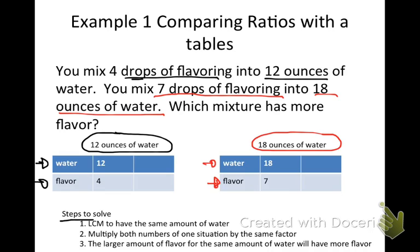The steps to figure that out: find the least common multiple to have the same amount of water. I'm looking at 12 and 18 — what's the smallest common multiple of both? Twelve times two is 24, but 18 doesn't go into 24. Twelve times three is 36 — 18 goes into 36. So the least common multiple is 36. I'm going to put 36 ounces of water for each of my charts.